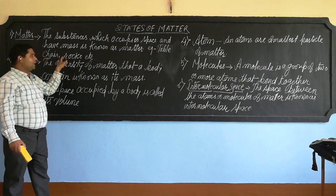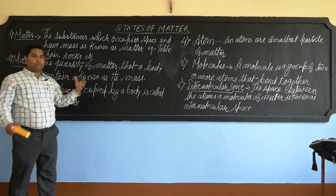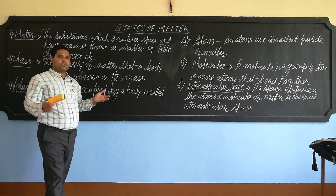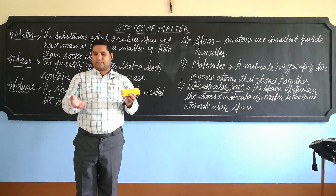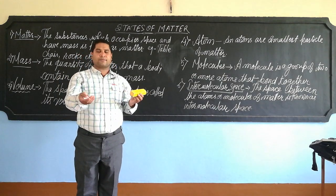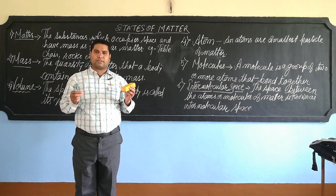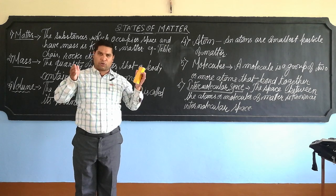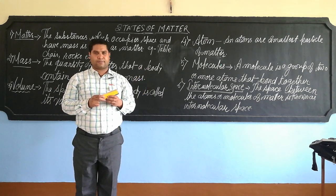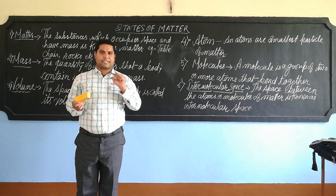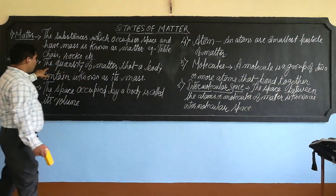Examples of matter include: table, chair, rocks, books, coffee, bag, dust, and chalk. All of these are matter because they occupy space and have mass.